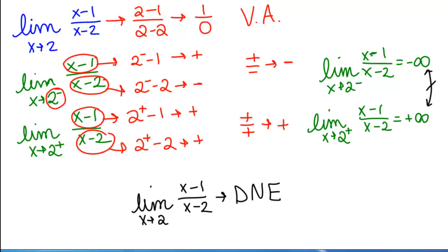To summarize the example: we took the limit as x goes to 2, plugged in, and found the form 1 over 0. Then we split into limits from the left and right. We used reasoning about the sign of the numerator and denominator to determine the sign of each one-sided limit and placed infinity after it. Then we compared the limits. If they had been the same on both sides, that would be our answer; but since they were different, the answer is does not exist.